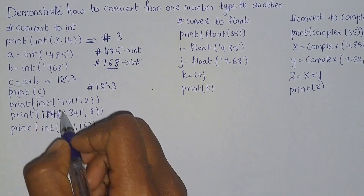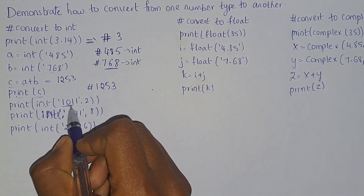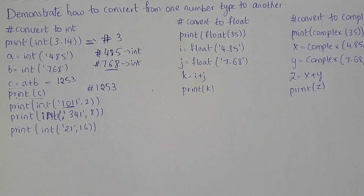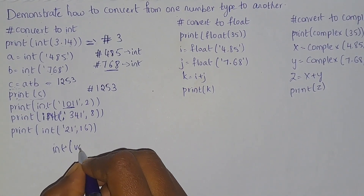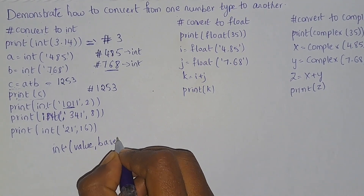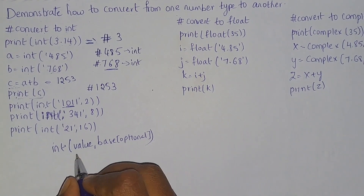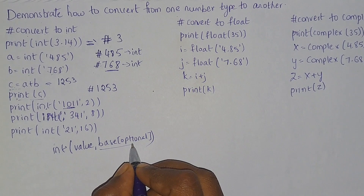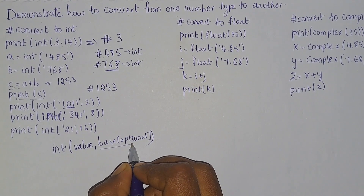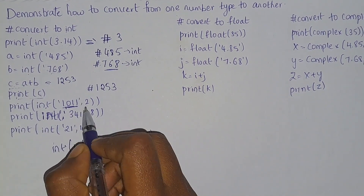Next, the int function can take a value as a parameter as well as an optional base. If you don't give any base, it will be considered as decimal. If you specify the base, it will convert the value from that specified base into decimal.